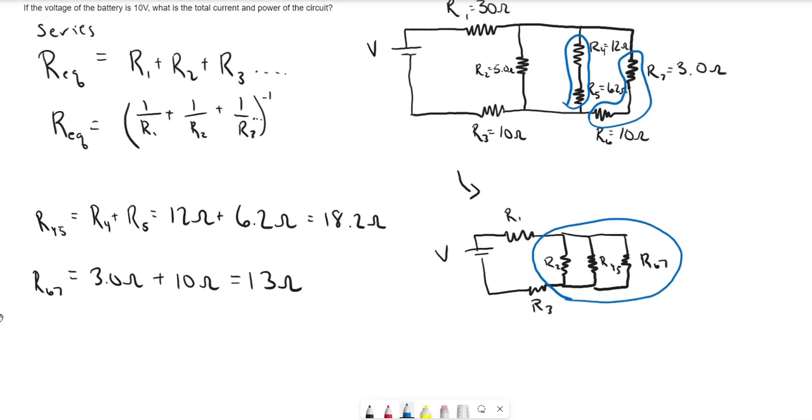So the equivalent resistance for these is going to be the inverse of 1 over R2 plus 1 over R4,5 plus 1 over R6,7.